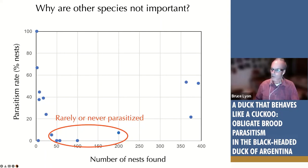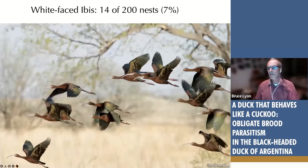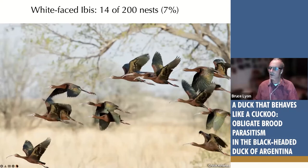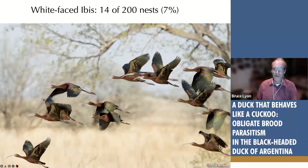White-faced ibis nest in big colonies — sometimes in the thousands. We had a smallish colony of 200 nests, but only 7% were parasitized, so that doesn't add up to a huge number of duck eggs. Common bird, rare as a host.